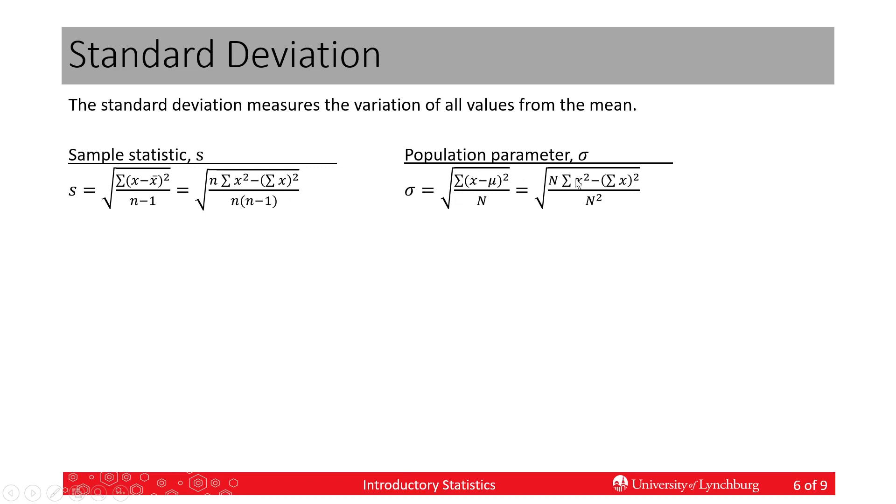Over here we get almost the same equation, except we're using capital N, the population size, instead of the sample size. Since we don't have n minus 1, we end up with n squared on the bottom instead of n times n minus 1.